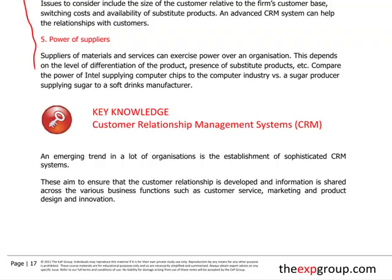The next thing I want to move on to is CRM systems - Customer Relationship Management systems. This is something of an emerging trend, because what we're seeing in a lot of organizations now is the establishment of quite sophisticated CRM systems. Exactly as the name suggests, these are information systems to ensure that we can manage the relationship with a customer, to develop it across various different functions, and ultimately enhance the relationship, leading to better performance through the future business customers can generate.